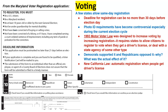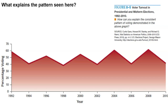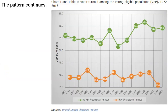California has an automatic registration law — when you get a driver's license, you're automatically registered to vote. We'll see how that plays out in terms of whether it improves the number of people who actually go to the polls. Looking at voter turnout over time, we see that people vote in presidential elections much more than in midterms — from 1972 to 2016, the voter-eligible turnout in presidential years is much higher than in midterm years, shown in the orange versus green on the chart.